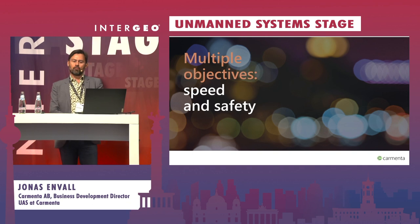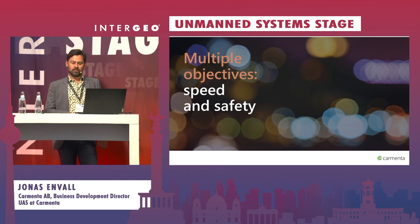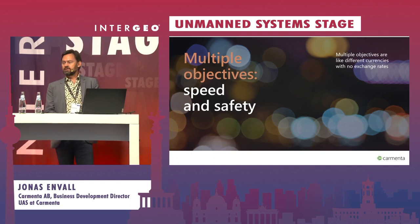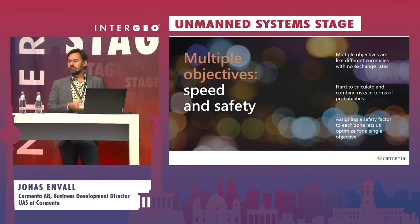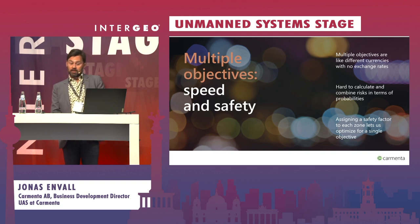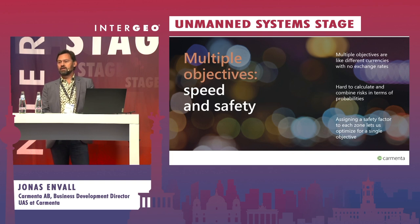Balancing speed and safety is one example of multi-objective optimization, which is complicated. Even if each objective can be individually minimized or maximized, there must be a definite way to compare numbers of different kinds — think of different currencies with no official exchange rate. Travel time is an objective that's easy to rate, but safety is not. Optimally, we'd talk about the probability of mission success, but that is really hard to optimize on. We solve this by assigning a safety factor to each zone we pass through, acting as an exchange rate between these currencies, allowing us to optimize on a single objective instead of two.